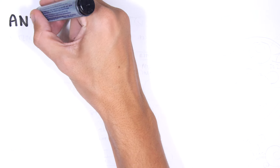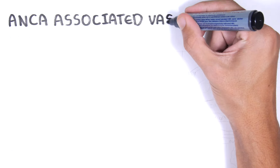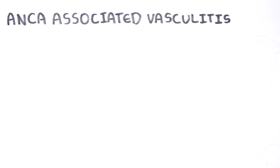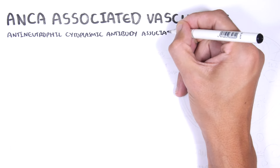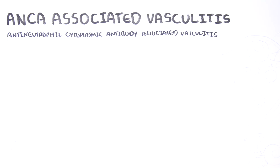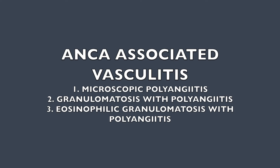ANCA-associated vasculitis is so called because in the person's blood there is presence of ANCA, which is an abbreviation for anti-neutrophil cytoplasmic antibody. ANCA-associated vasculitis usually tends to affect small and medium-sized vessels. There are three main types: microscopic polyangiitis, granulomatosis with polyangiitis, and eosinophilic granulomatosis with polyangiitis.